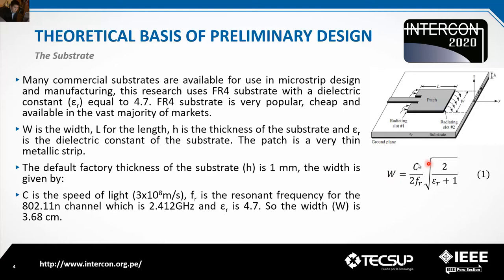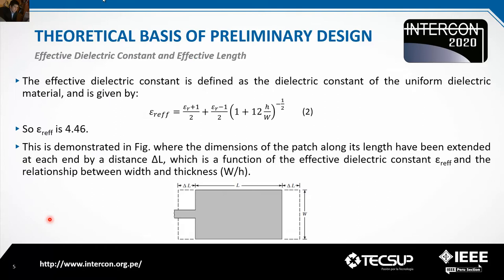You can calculate the width. C is the speed of light, FR is the frequency — I selected channel 2.412 GHz — and ER is the dielectric constant, equal to 4.7. So the calculated width is 3.68 cm.